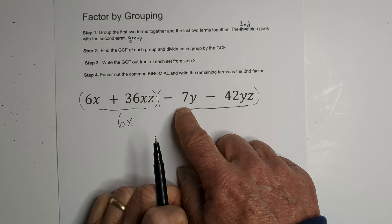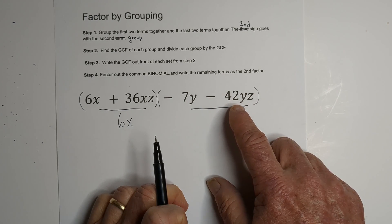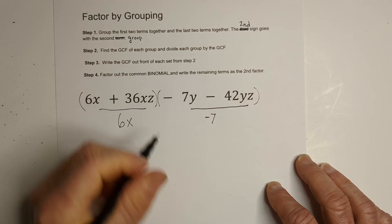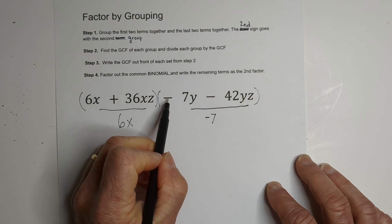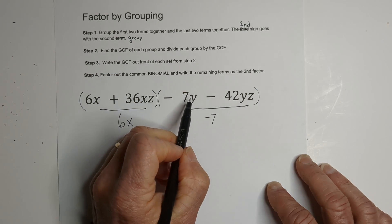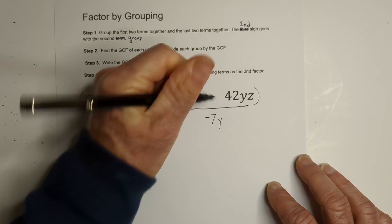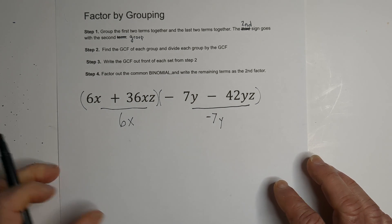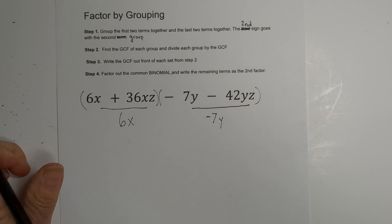So the GCF of 7 and 42 will be a negative 7. Remember, it's going to take this sign. Now we have a common y. It's to the first power, so it's at the lowest, and then we have our GCF of both terms.